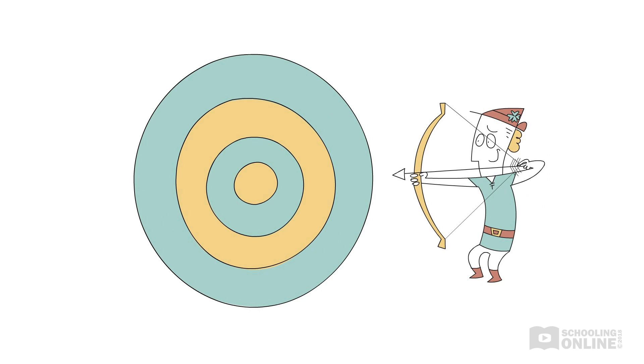On the other hand, Fluky Luke demonstrates a very large random error. His arrows might hit above, below or to the side of the target. He might hit close to the bullseye or he might miss. Fluky Luke is so unpredictable that he cannot shoot consistently, so he is not a reliable archer.